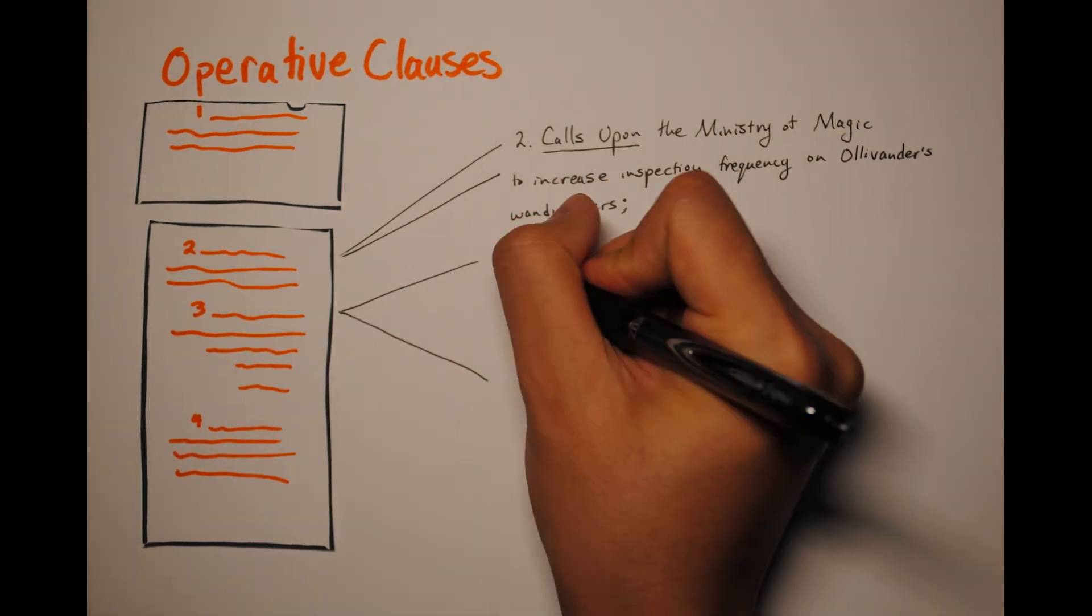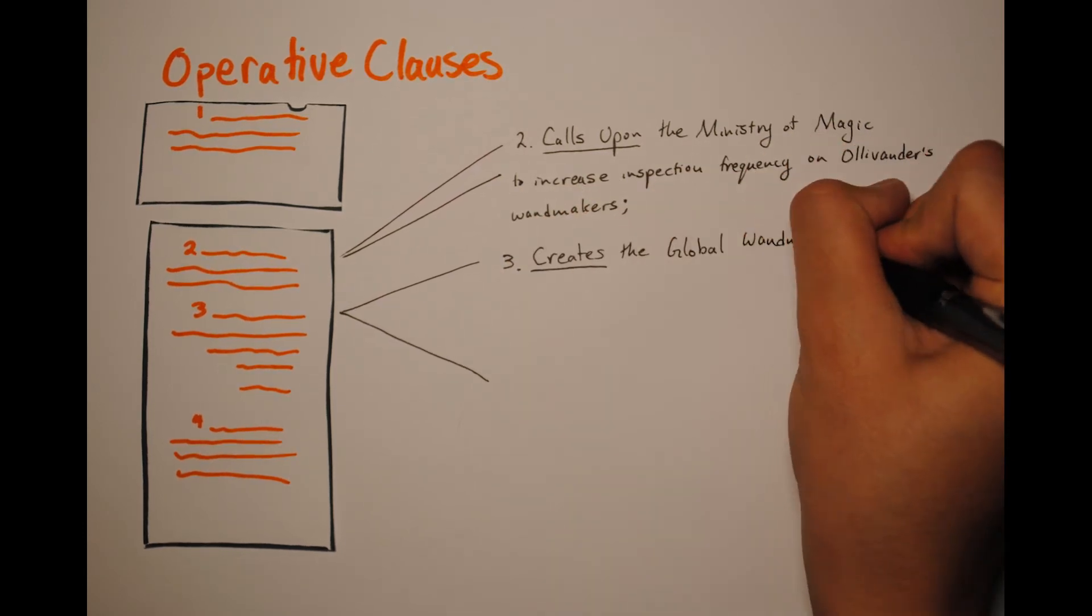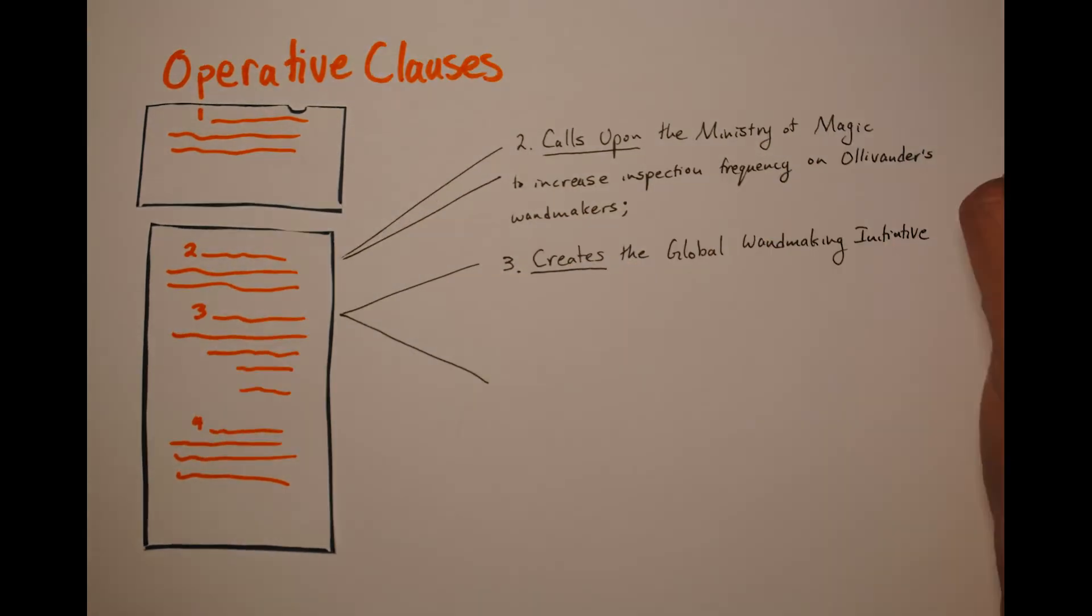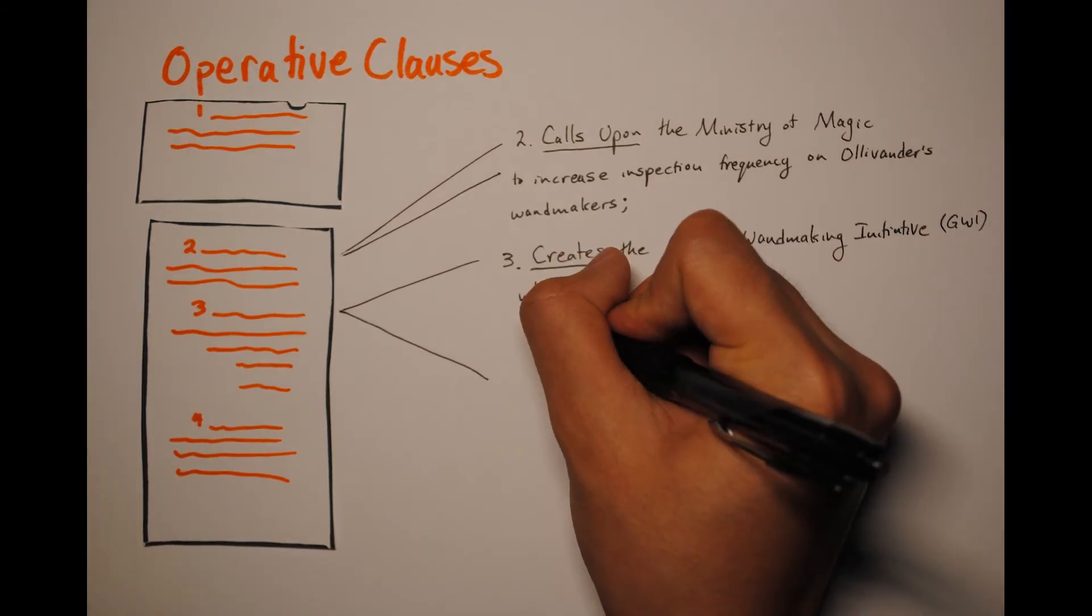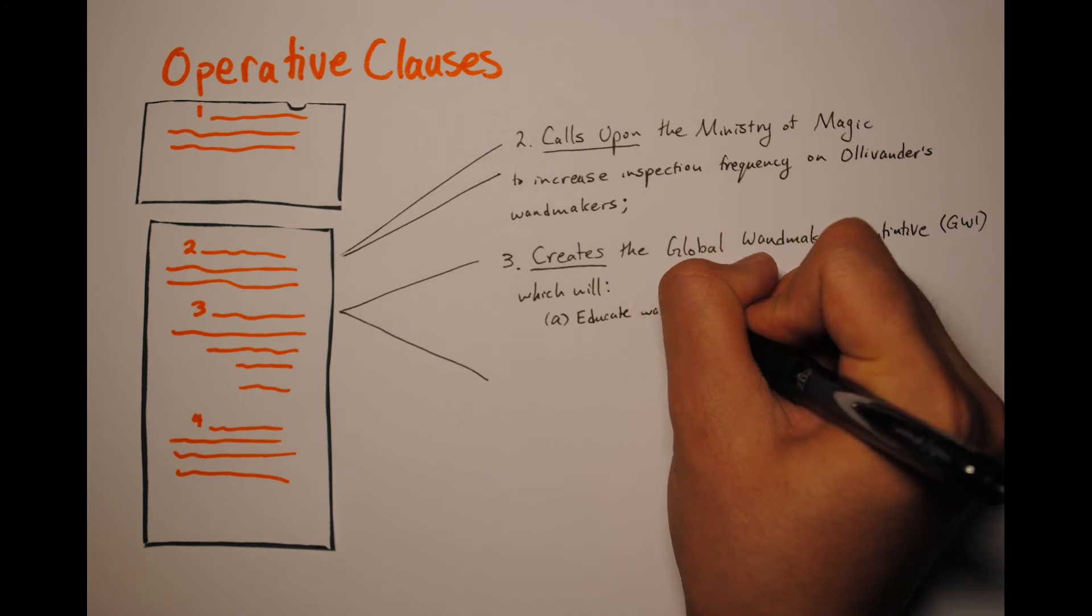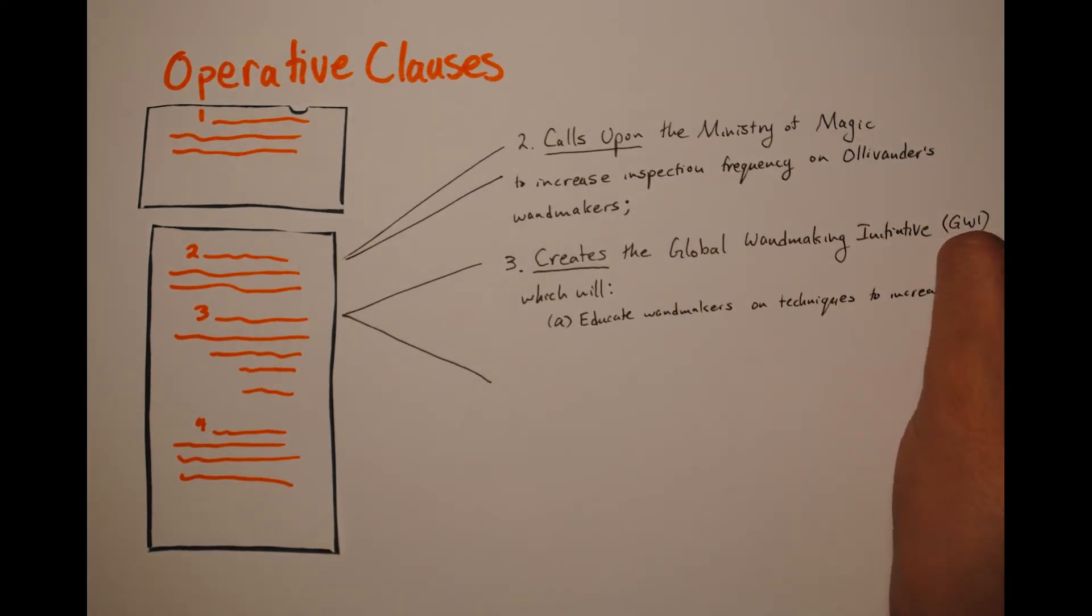If you need to elaborate on ideas introduced within an operative clause, you can use sub clauses. These should be beneath the main clause and marked by lowercase letters. Sub clauses do not begin with action words. If you need to get into even more detail, there are also sub sub clauses noted by roman numerals.